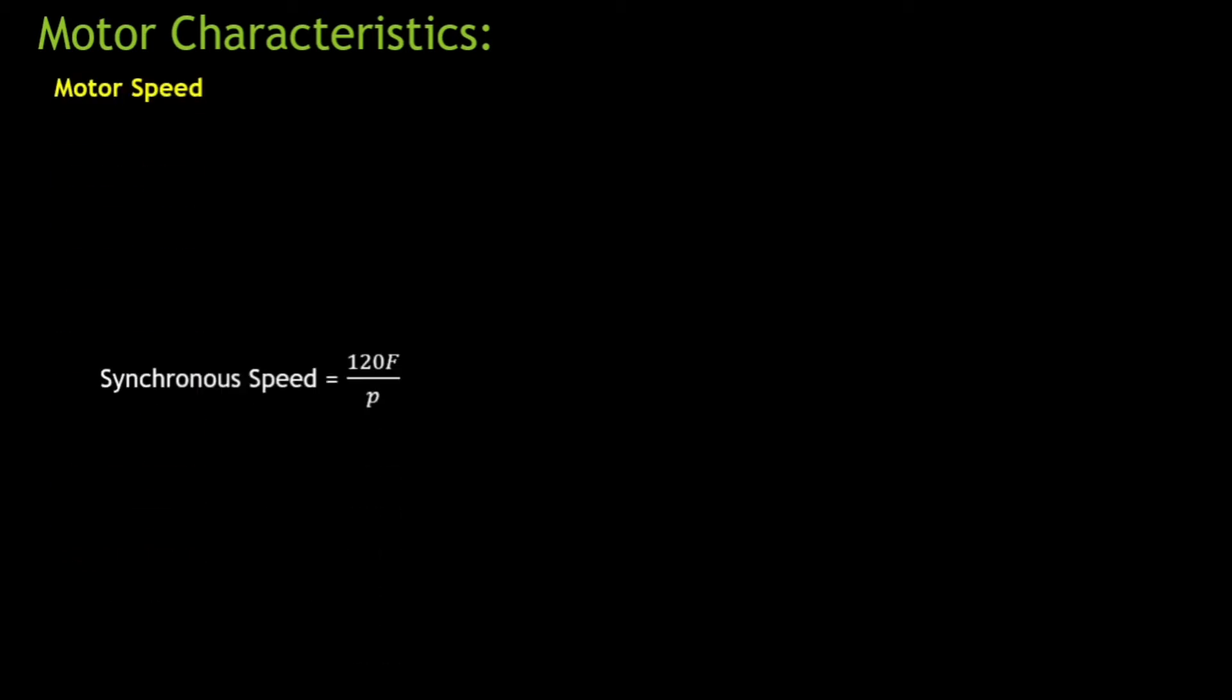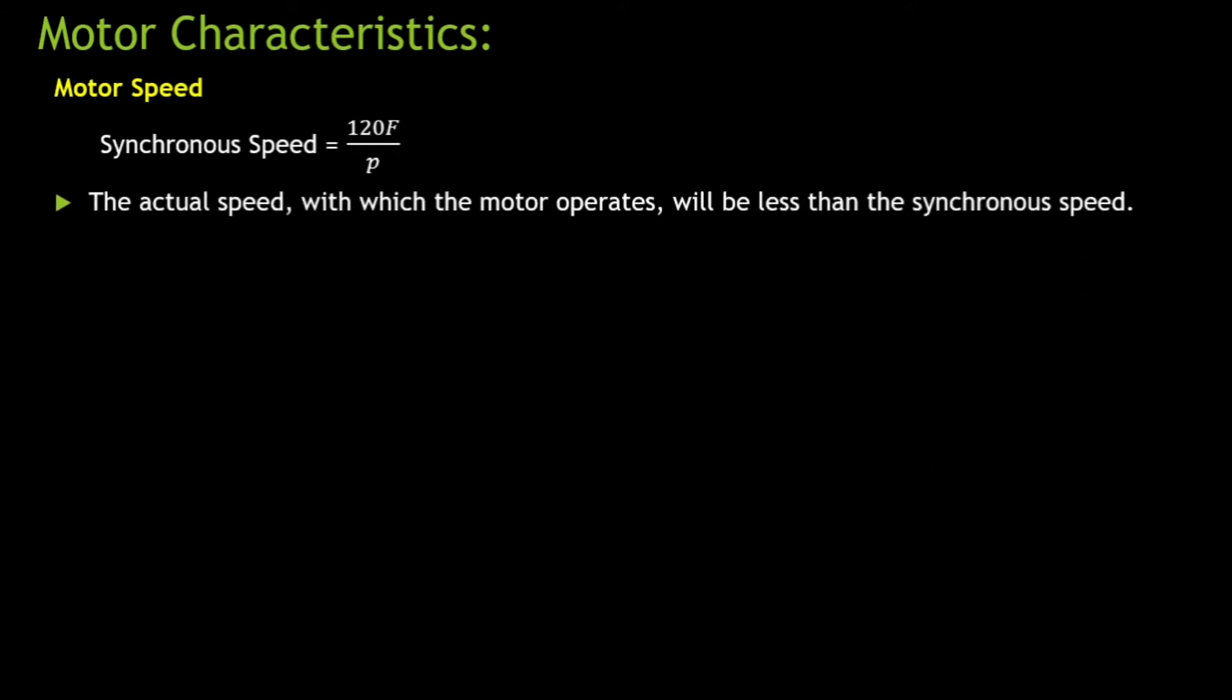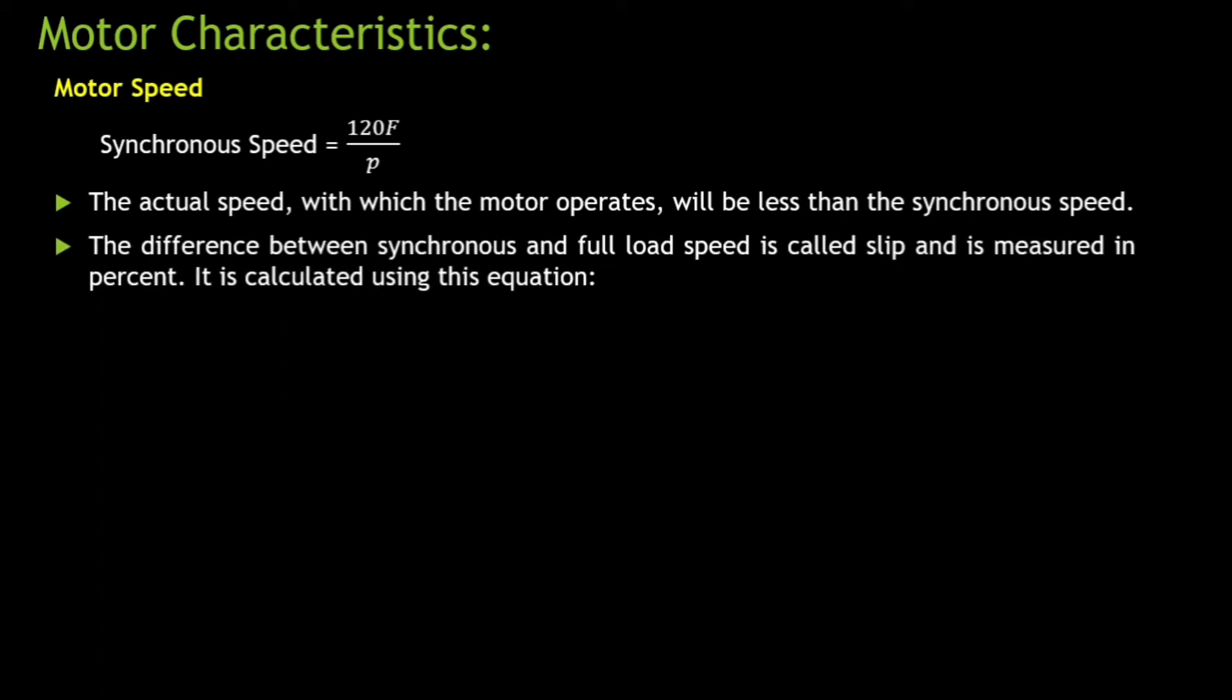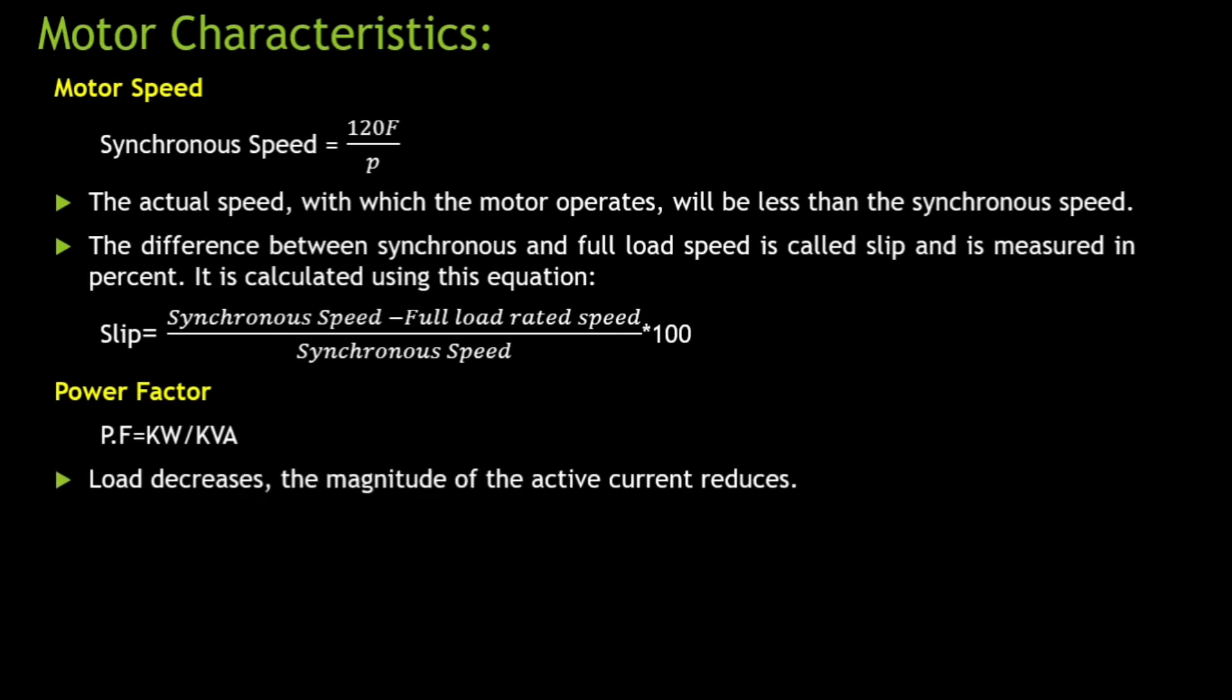Motor speed is 120F by P, where F is the frequency and P is the number of poles. The actual speed with which the motor operates will be always less than synchronous speed. The difference between the synchronous speed and the full load speed is known as the slip, and the formula for slip is synchronous speed minus full load rated speed upon the synchronous speed into 100. And another thing is the power factor. Power factor is given by the formula kilowatts upon kVA.